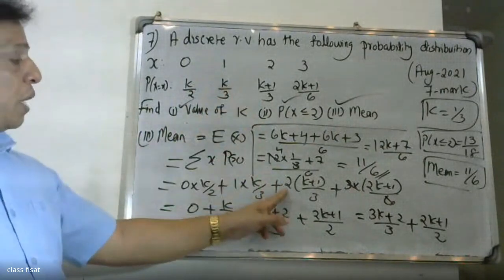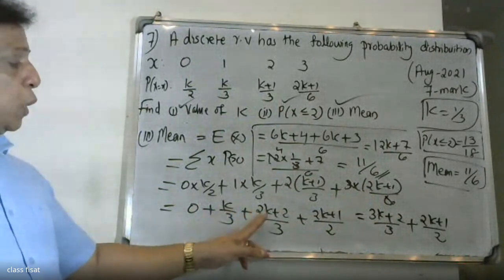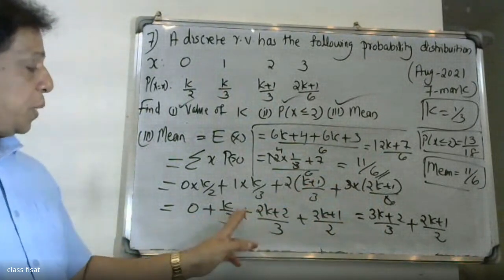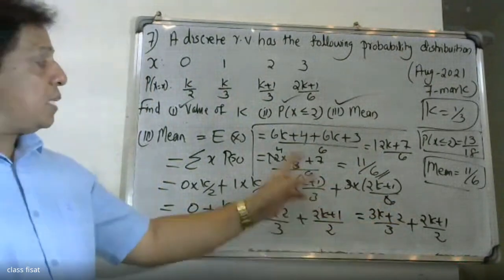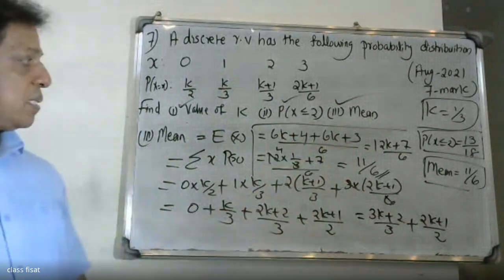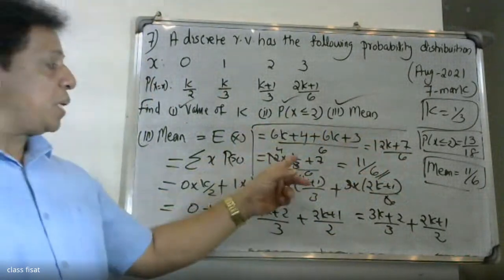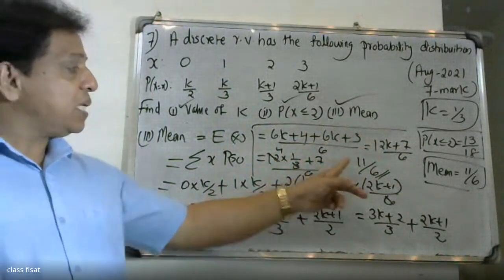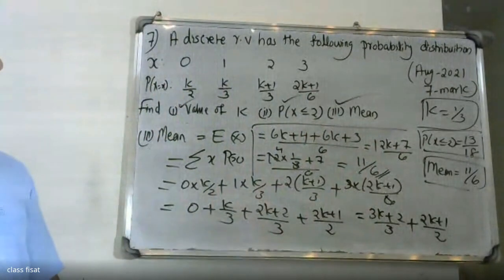At x=1: k/3, at x=2: (2k+2)/3, at x=3: (2k+1)/2. Adding k terms: 3k plus 2 by 3 plus 2k plus 1 by 2, cross multiplying gives 6k+4 plus 6k+3 divided by 6, which is 12k+7 by 6. Substituting k=1/3, the expectation of X equals 11 by 6.